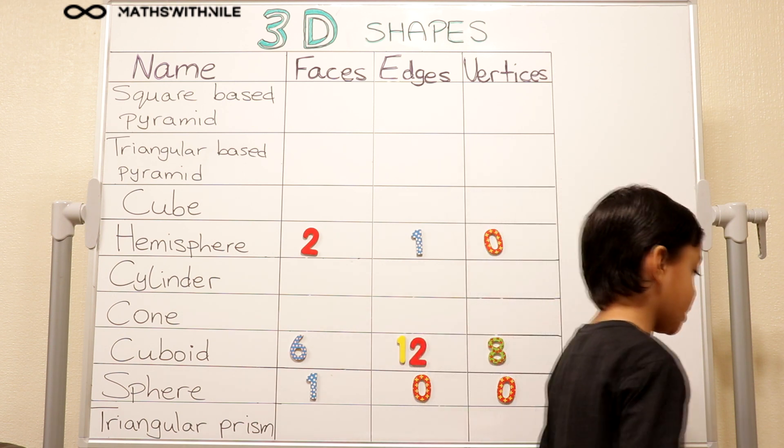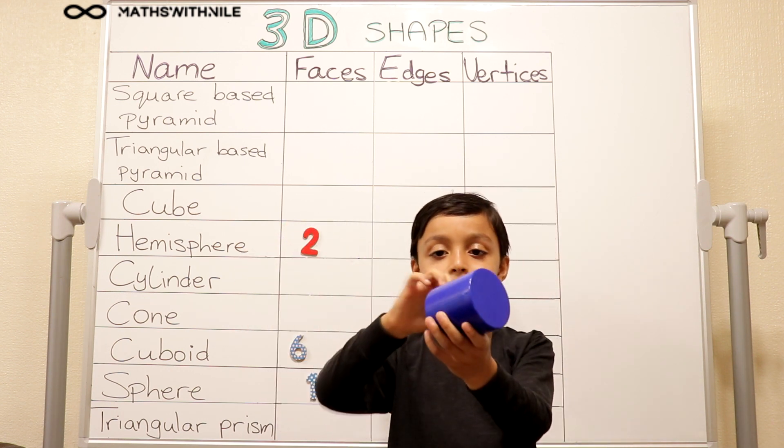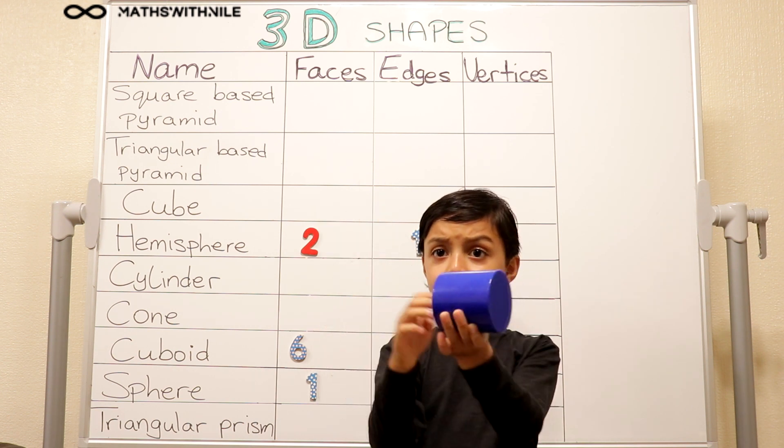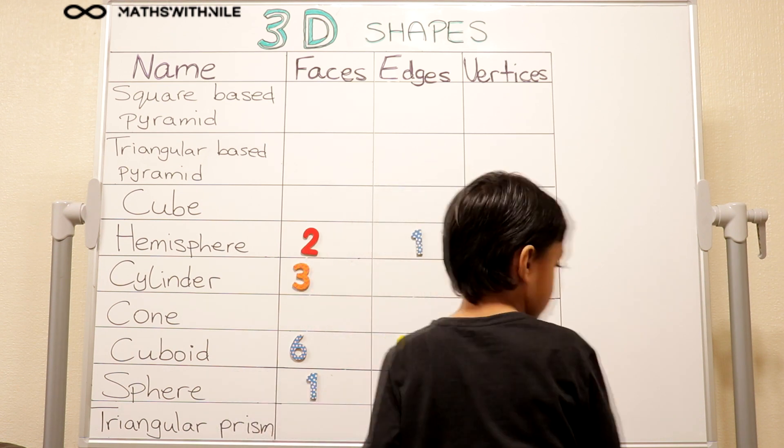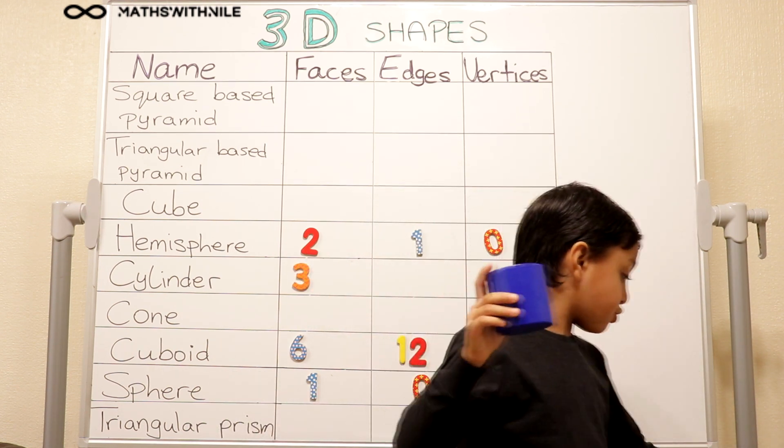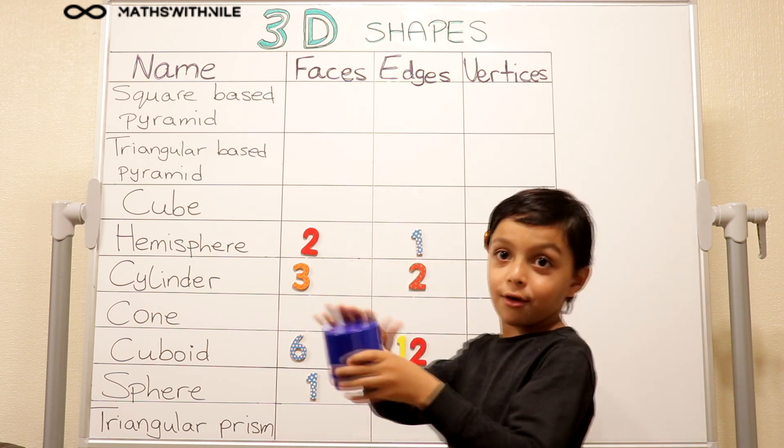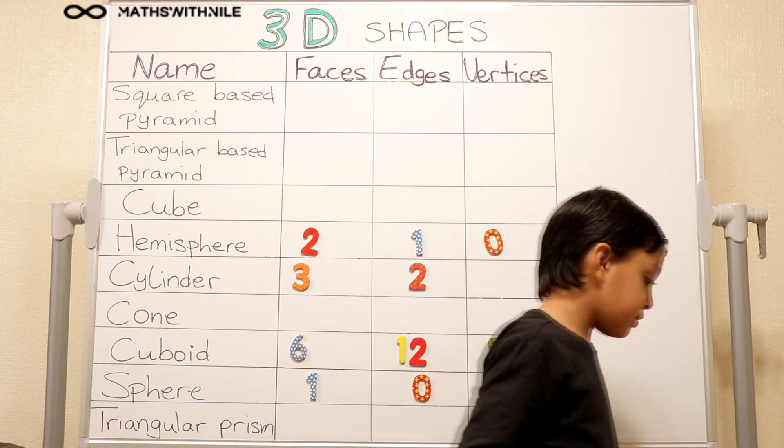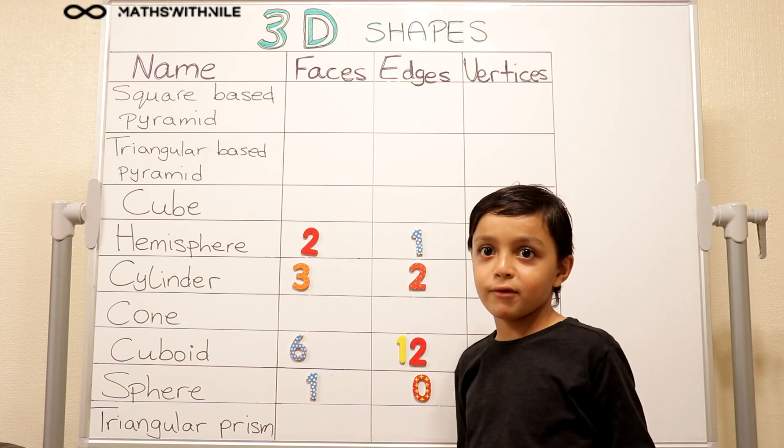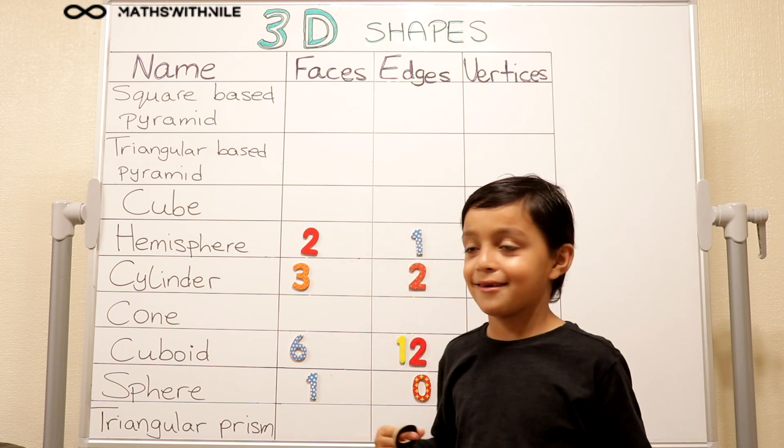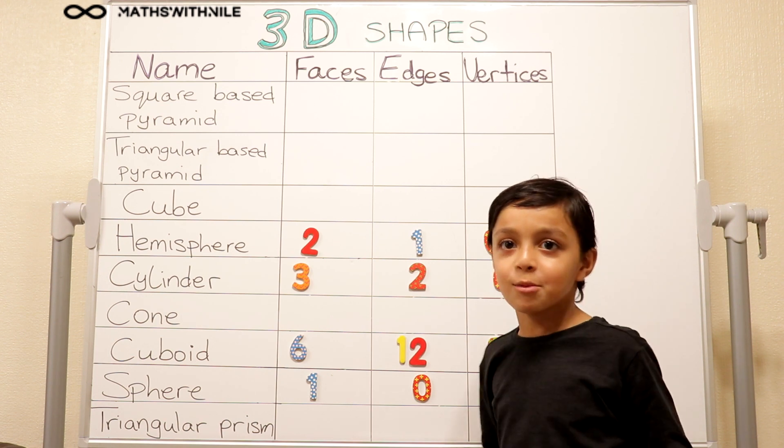Grab another shape. I pick a cylinder. Tell me about the properties of the cylinder. One face, two face, three face. Three faces. Two edges. But you didn't show us the two edges. Two edges, like one, two. Two edges. And how many vertices? Zero vertices. It's very common for shapes to have zero vertices. I've noticed that.